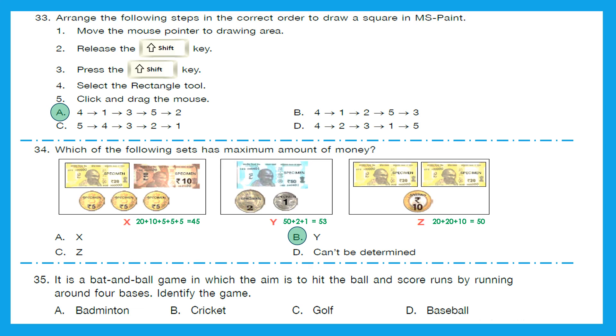Question 35: It is a bat and ball game in which the aim is to hit the ball and score runs by running around four bases. Identify the game. So, bat and ball game is either cricket or baseball out of it, right? But, in which game do we hit the ball and then we run, score run by running around the bases? That is baseball. So, option D is the right answer. With this we have successfully solved one more question paper of class 1 IGKO Olympiad.